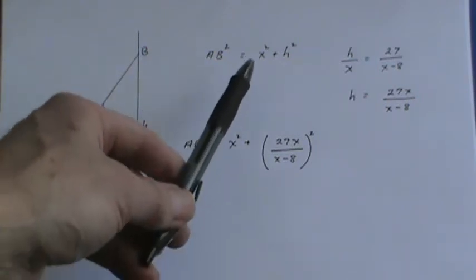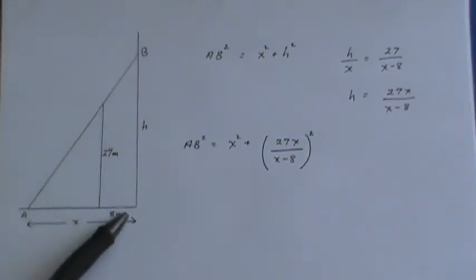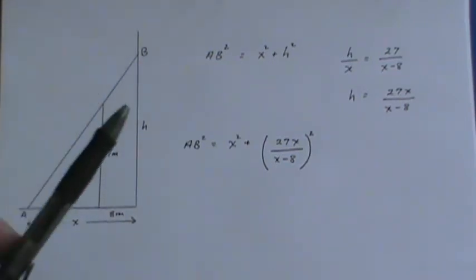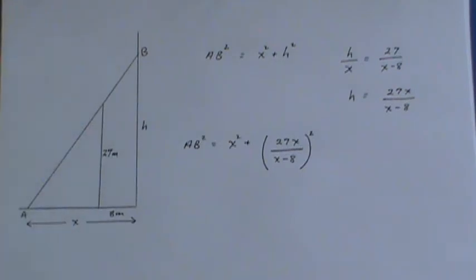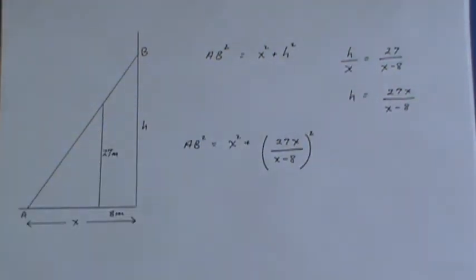And we start off with the Pythagorean Theorem, ab squared equals x squared plus h squared. Now because we've got two variables here we have to go to similar triangles to get a replacement for one of the variables.